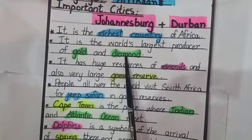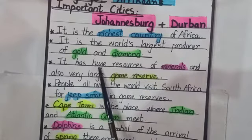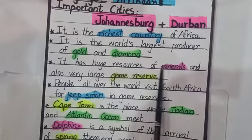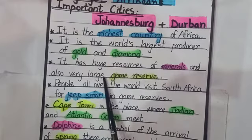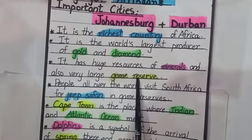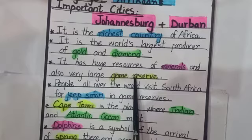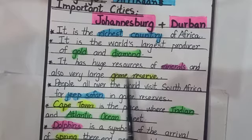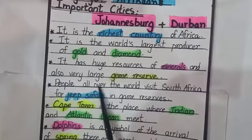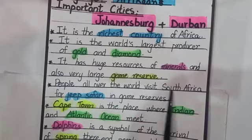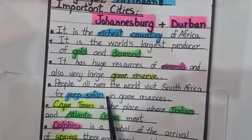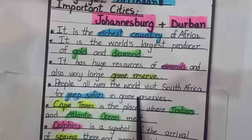South Africa is the world's largest producer of gold and diamond. This is the reason it is the richest country of Africa. It has vast resources of minerals and also very large game reserves. A game reserve, as we discussed in the previous lecture, is a place where wild animals live freely.